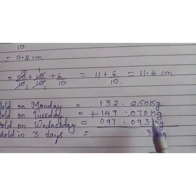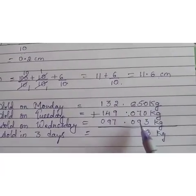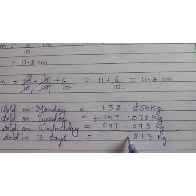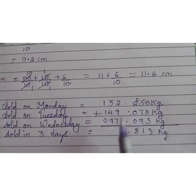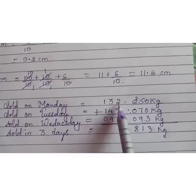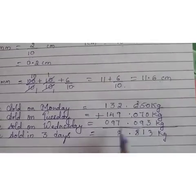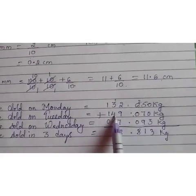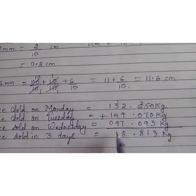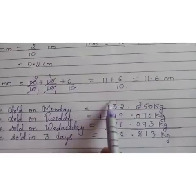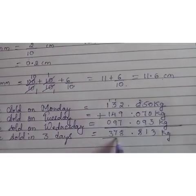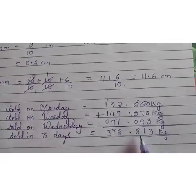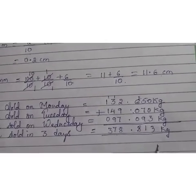0 plus 0 plus 3, 3. 5 plus 7 is 12, 12 plus 9 is 21. 6 plus 2 is 8. Place the decimal as it is. 2 plus 9, 11. 11 plus 7, 18. Give 1 carry, 8 as down. 1 plus 3, 4. 4 plus 4, 8. 8 plus 9, 17. 1 plus 1, 2 plus 1, 3. So totally in 3 days he sold 378.813 kg.